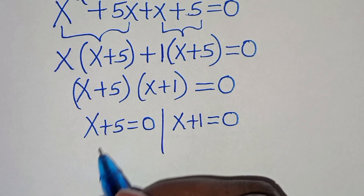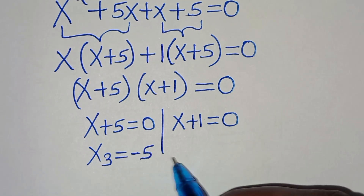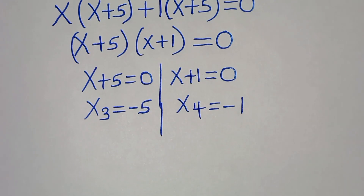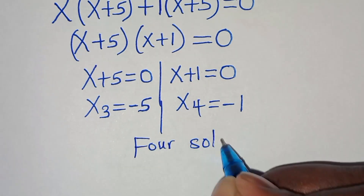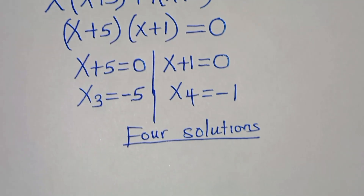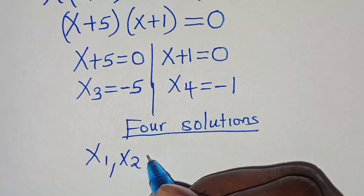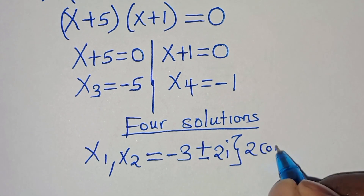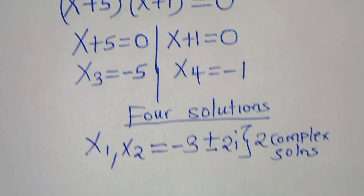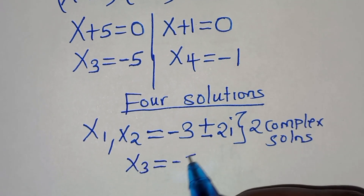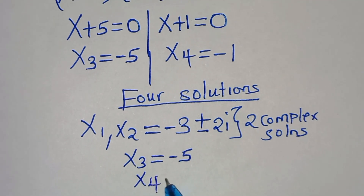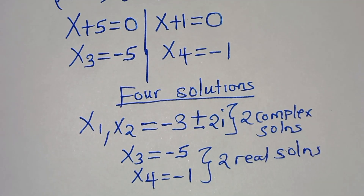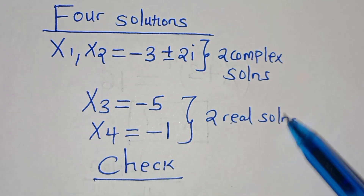From x plus 5 equals 0, we get x3 equals negative 5. From x plus 1 equals 0, we get x4 equals negative 1. So altogether we have 4 solutions: x1 and x2 equal negative 3 plus or minus 2i, which are 2 complex solutions, and x3 equals negative 5 and x4 equals negative 1, which are 2 real solutions.